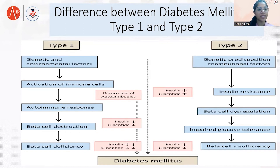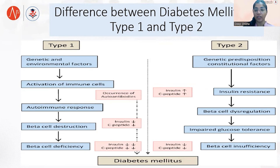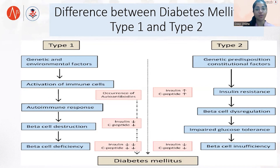In type 1, as you can see, genetic and environmental factors cause immune cells to activate autoimmune responses, leading to beta cell destruction and beta cell deficiency, which results in insufficient insulin production. In type 2, genetic predisposition and constitutional factors lead to insulin resistance, beta cell dysregulation, and impaired glucose tolerance, ultimately resulting in a deficiency. Both conditions ultimately lead to diabetes mellitus — one to type 1 and the other to type 2.